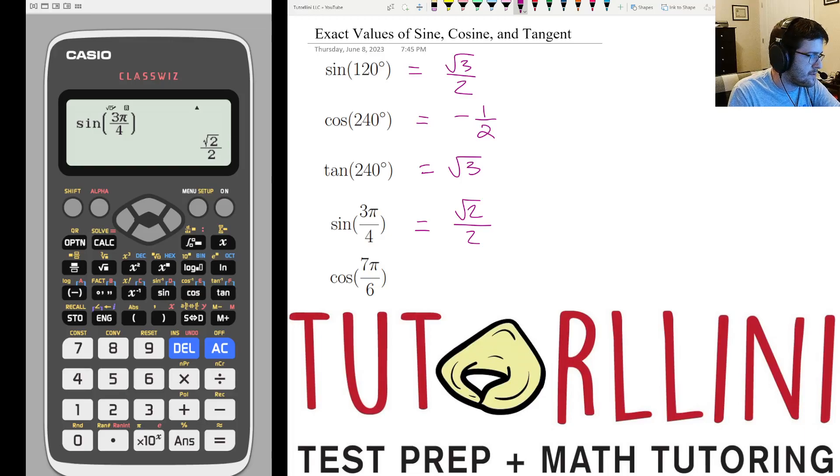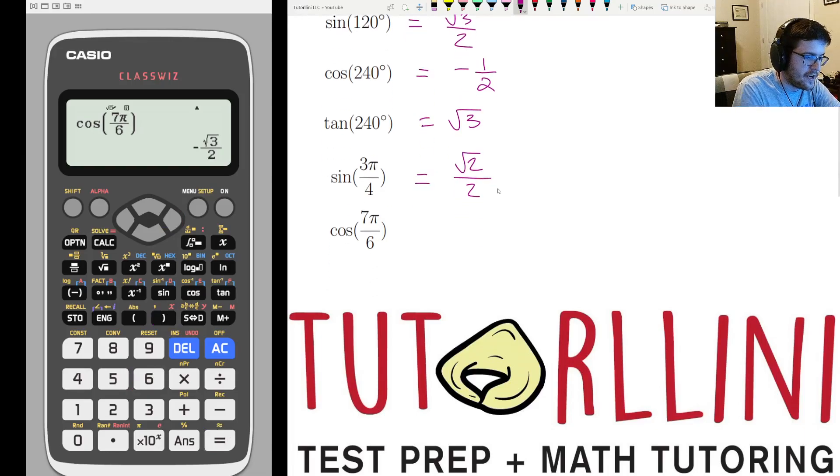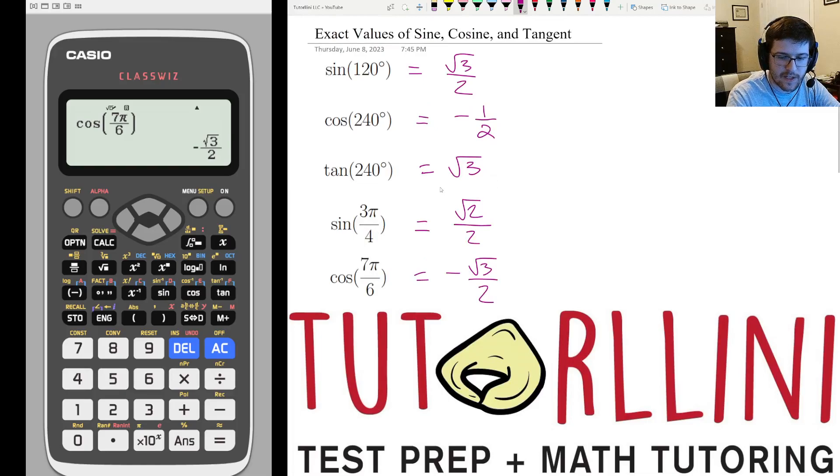Now we're going to do the last one. We're still in radians, because there's no degree symbol. So cosine of 7 pi over 6, and that gives us negative root 3 over 2. All right, very good. Let's move on to the next slide.